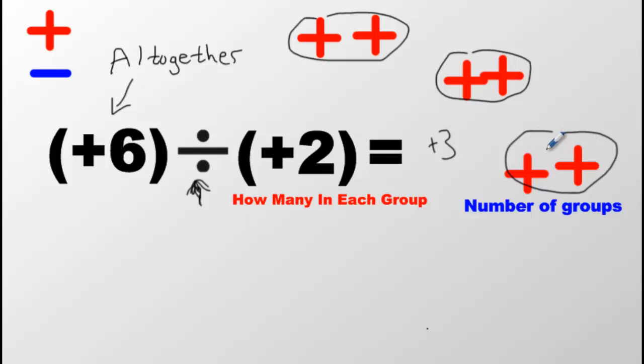Or the number of teams. If this was people, how many teams did they make? They made three teams. Team A, Team B, and Team C. So understand that. And this is going to come up again.